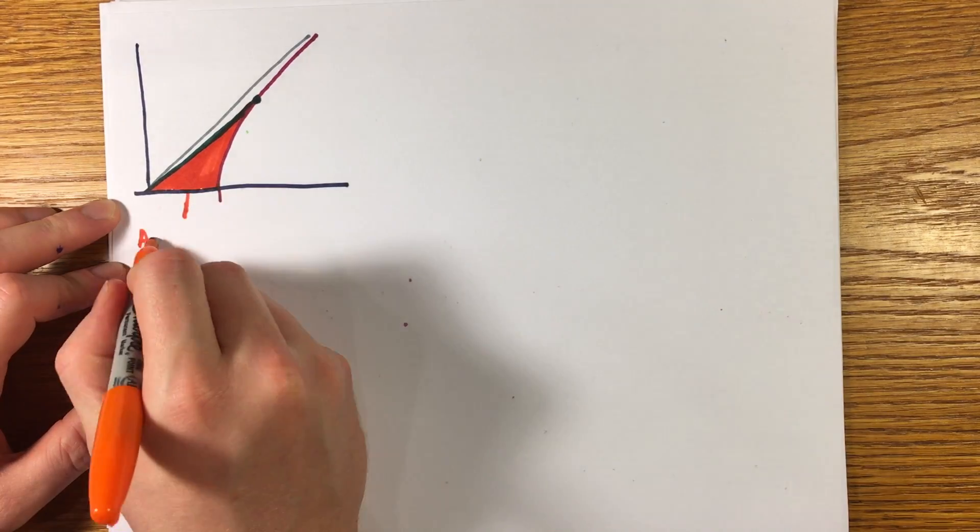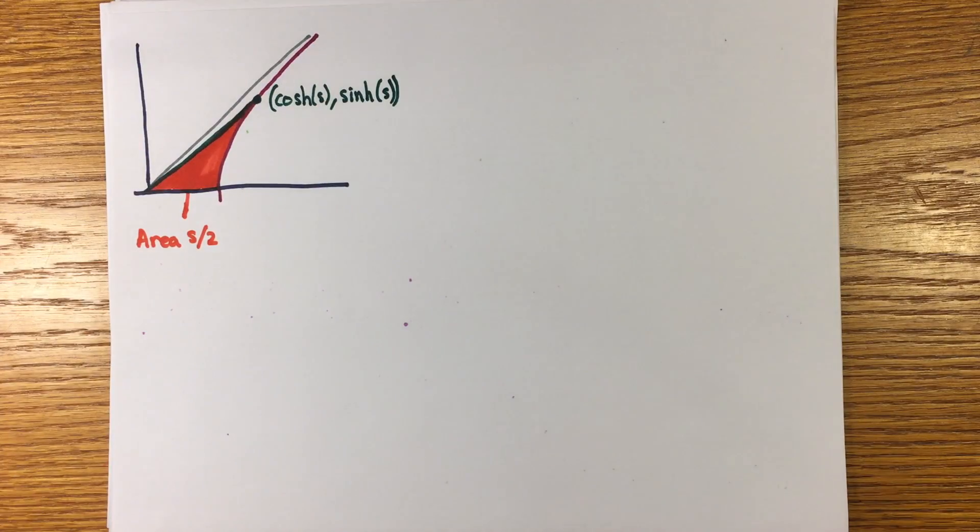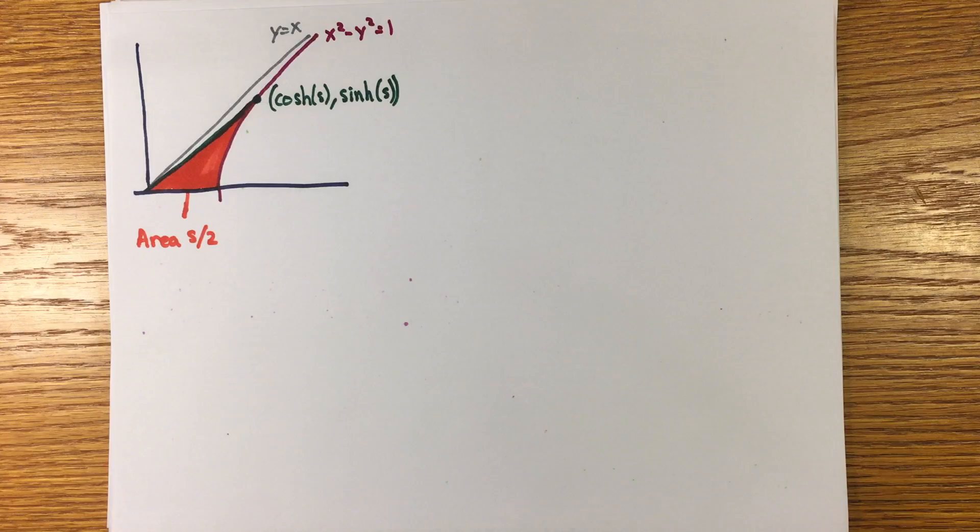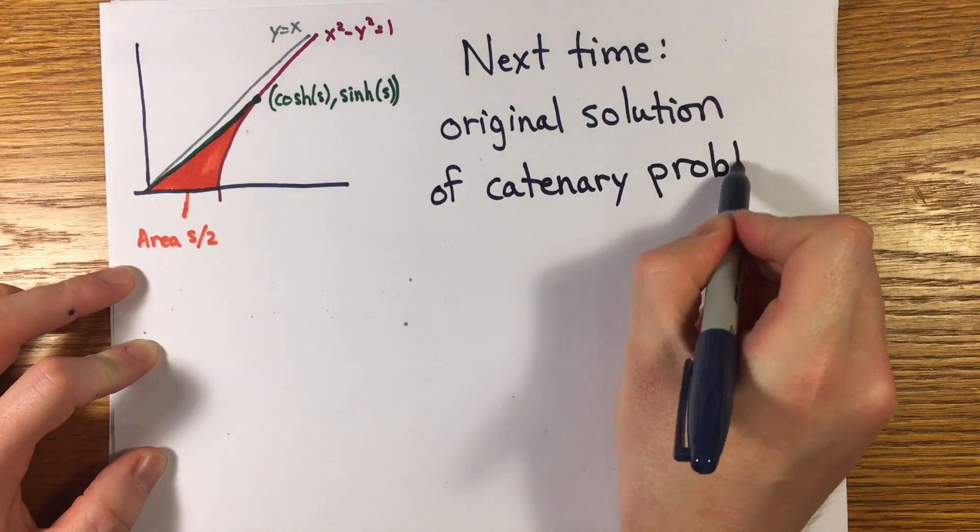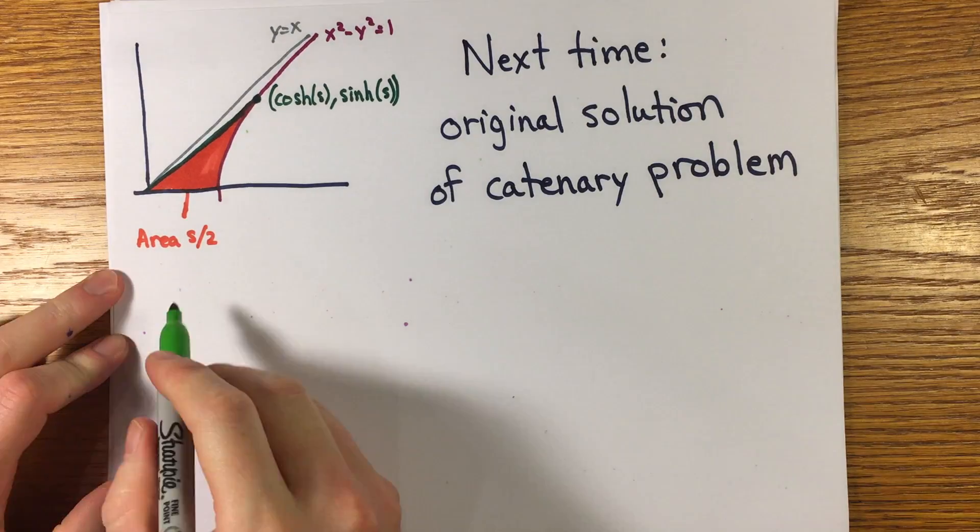In the next episode, I'm going to give the original solution of the catenary problem, which can be written in terms of the hyperbolic cosine. Thanks for watching.